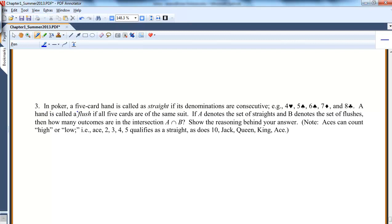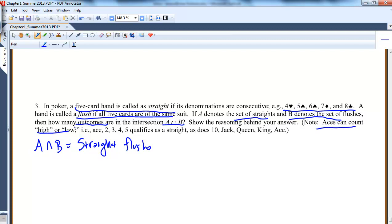In poker, a 5-card hand is called a straight if it's a straight set of numbers, like 4, 5, 6, 7, 8. It's called a flush if all cards are the same suit. So if A denotes the set of straights and B denotes the set of flushes, then A intersect B is straight flushes. What's the question? How many outcomes are straight flushes? Aces count as high or low.